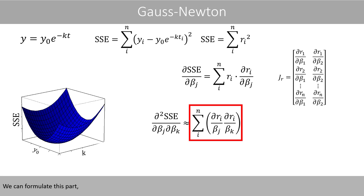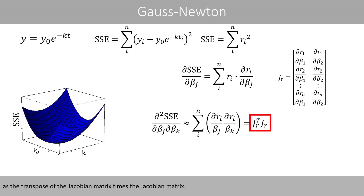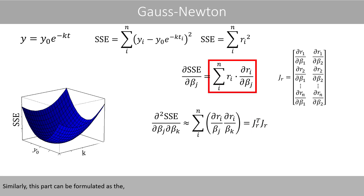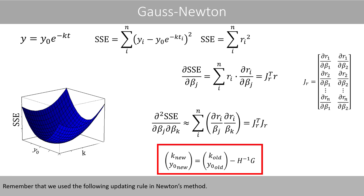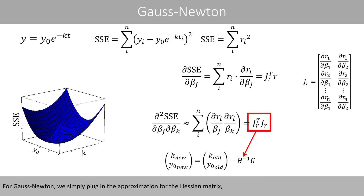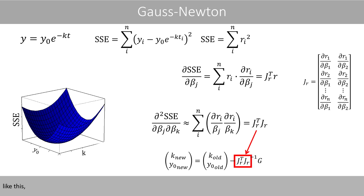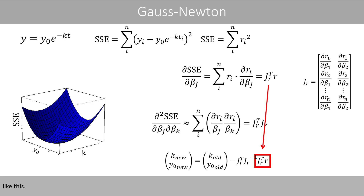We can formulate the approximated second derivative as the transpose of the Jacobian matrix times the Jacobian matrix. Similarly, the gradient term can be formulated as the transpose of the Jacobian matrix times the residual vector. Recalling the Newton's method updating rule, for Gauss-Newton we substitute the approximation of the Hessian matrix and the gradient accordingly.